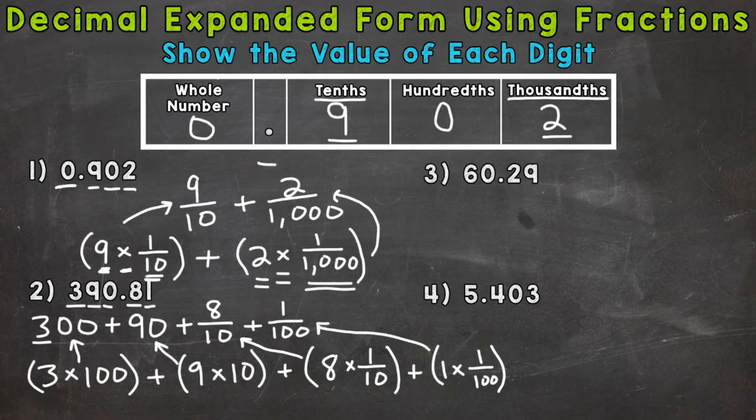So we start with the greatest value digit, so the one furthest to the left, which would be the six here, which is a six that has a value of 60, plus this two, which has a value of two tenths, plus this nine, and that has a value of nine hundredths.